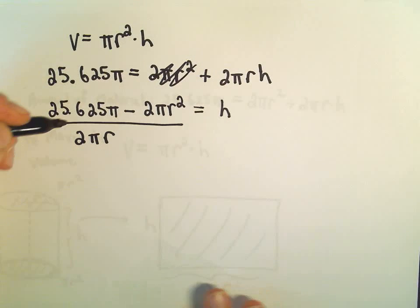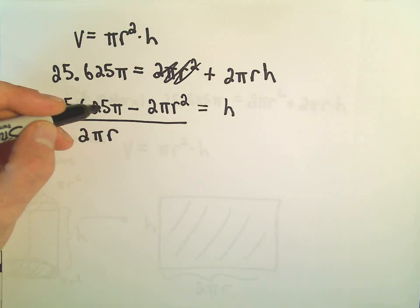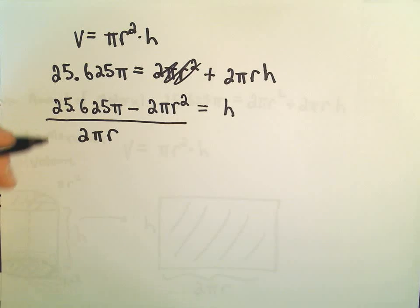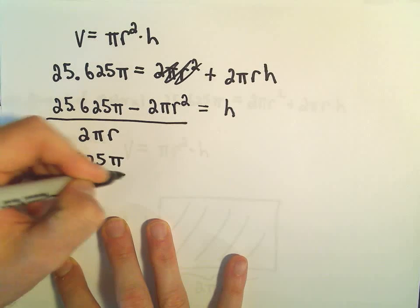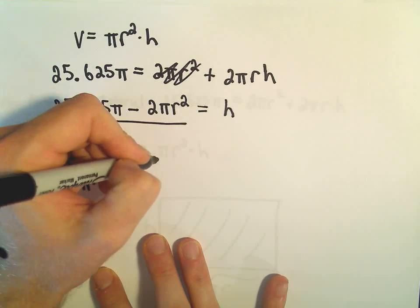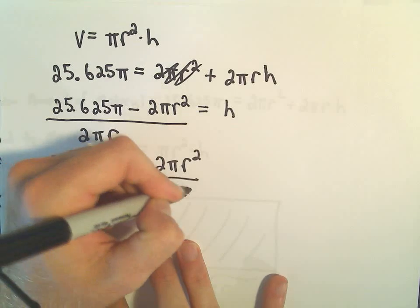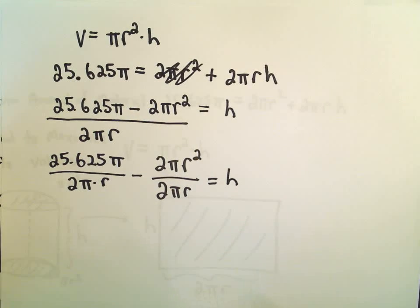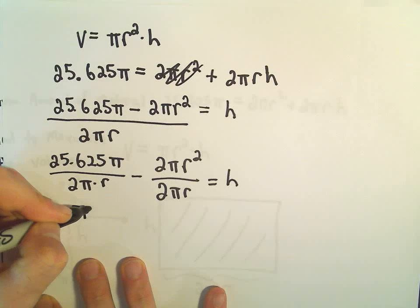I think I'm even going to go ahead and simplify this a little bit more. So we could make this 25.625π over 2πR. So let's just go ahead and write that, over 2π times R. And then minus, we would have 2πR² over 2πR. That would be our value for H. So let's see, if we divide 25.625, if we divide that by 2, we've got 12.8125.